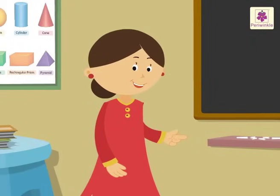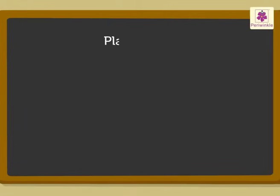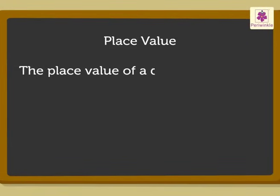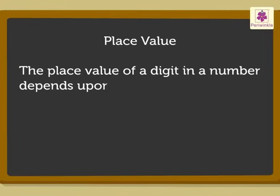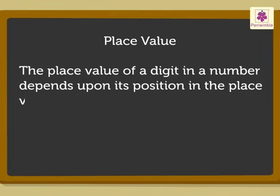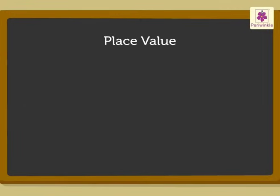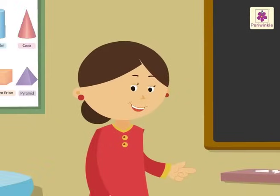Let us begin. First, let me tell you what we mean by the place value of a digit. The place value of a digit in a number depends upon its position in the place value chart. Let us understand this with the help of a number.